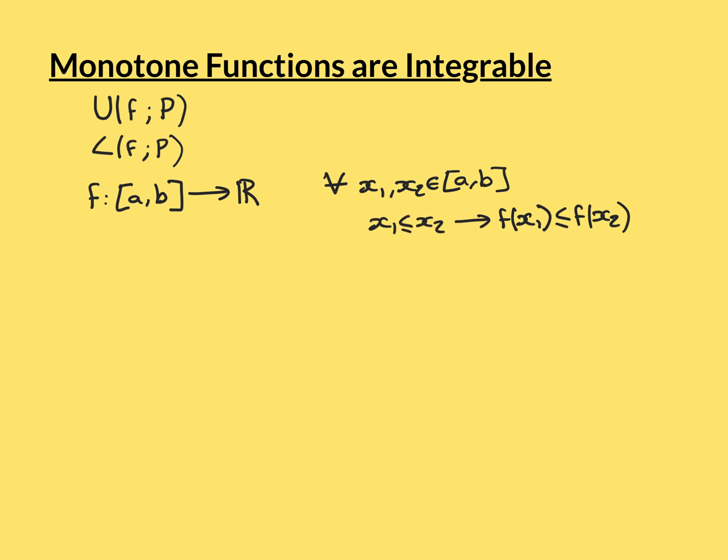This is what it means for the function to be monotonically increasing: that if X2 is greater than or equal to X1, then F(X1) is going to be less than or equal to F(X2).